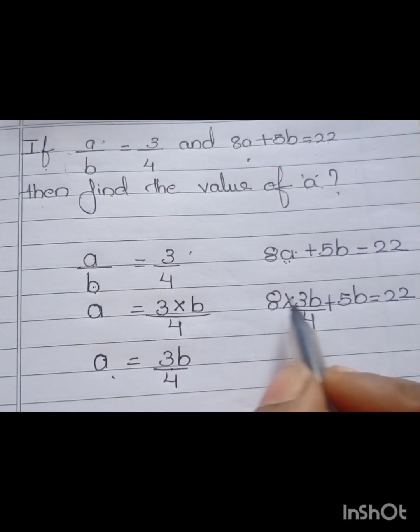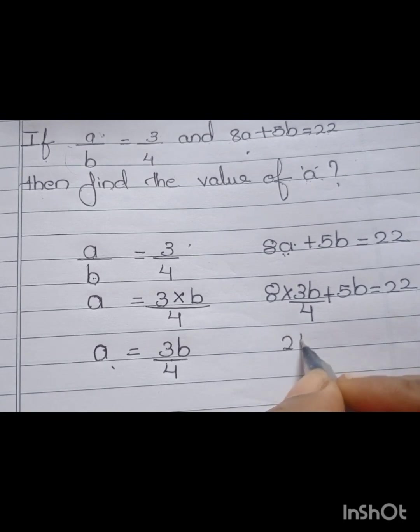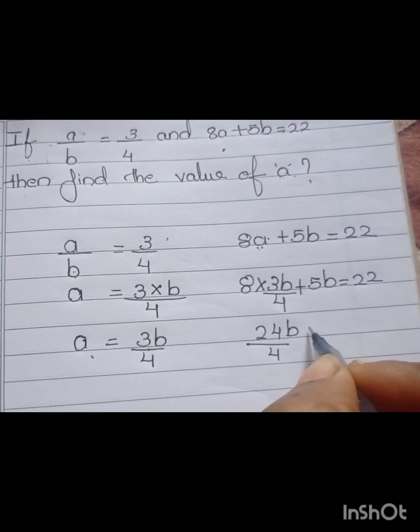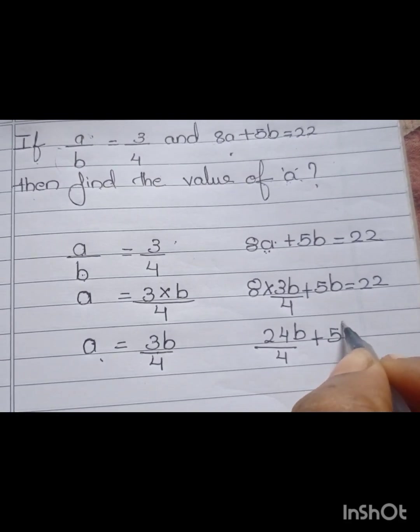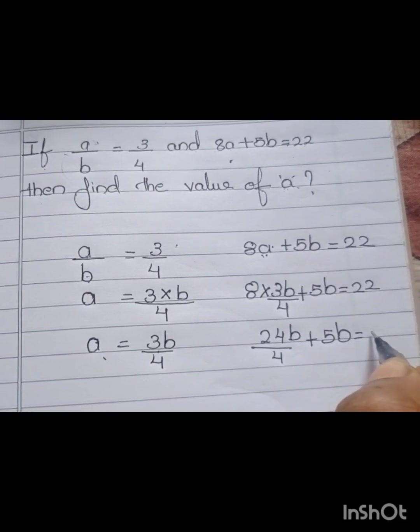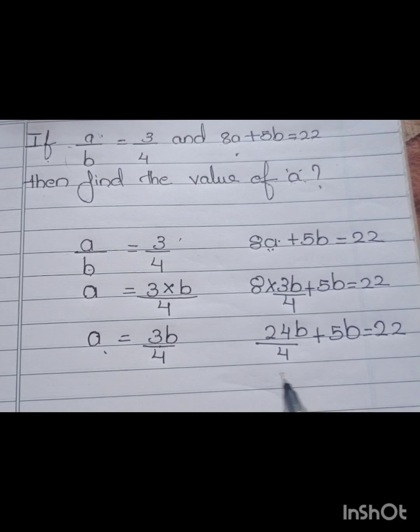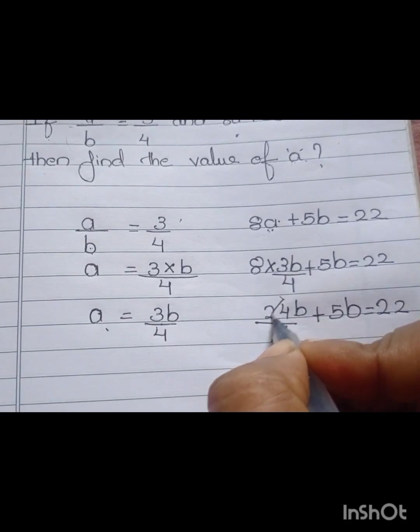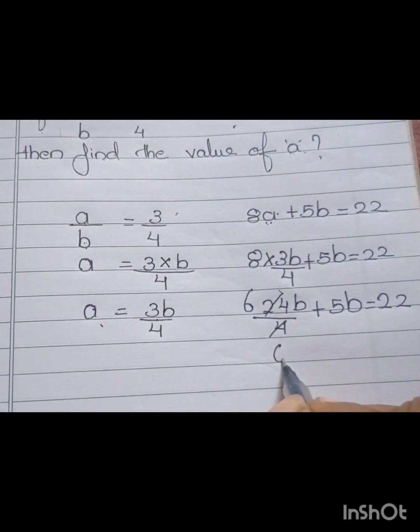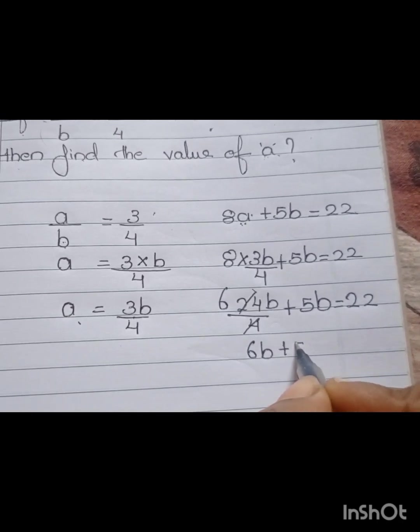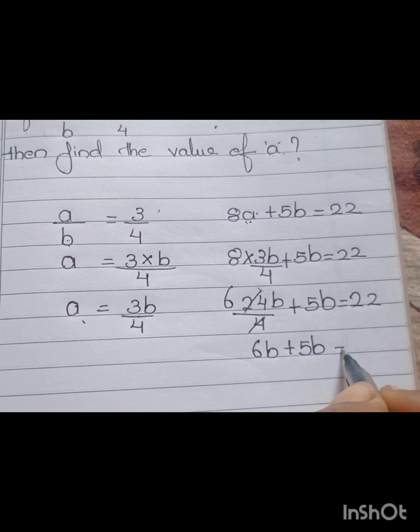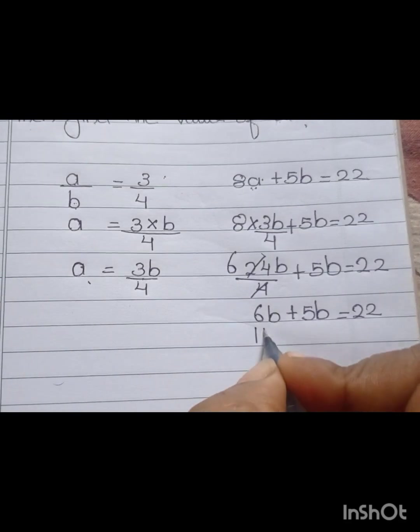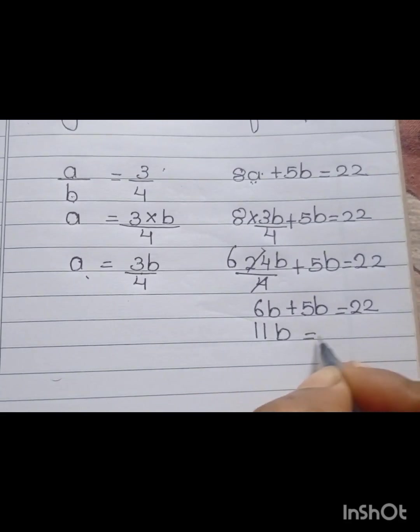Now, multiply 8 into 3B by 4 plus 5B equal to 22. Then, we get 6B plus 5B equal to 22. Then, 11B equal to 22.